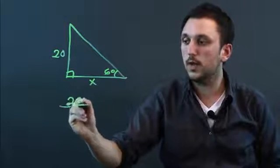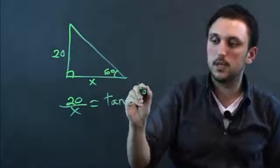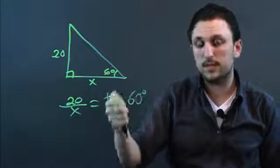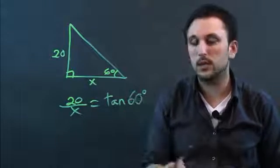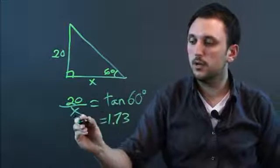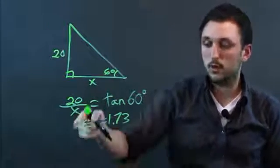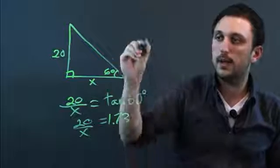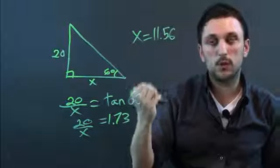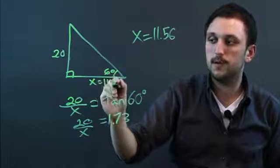So we say 20 over x equals tan 60, and we enter this into the calculator. You put 60 and then tan if you're dealing with a scientific calculator, and you get 1.73 equals 20 over x. So you cross multiply, and you get x equals 11.56, roughly. So the distance here is 11.56.